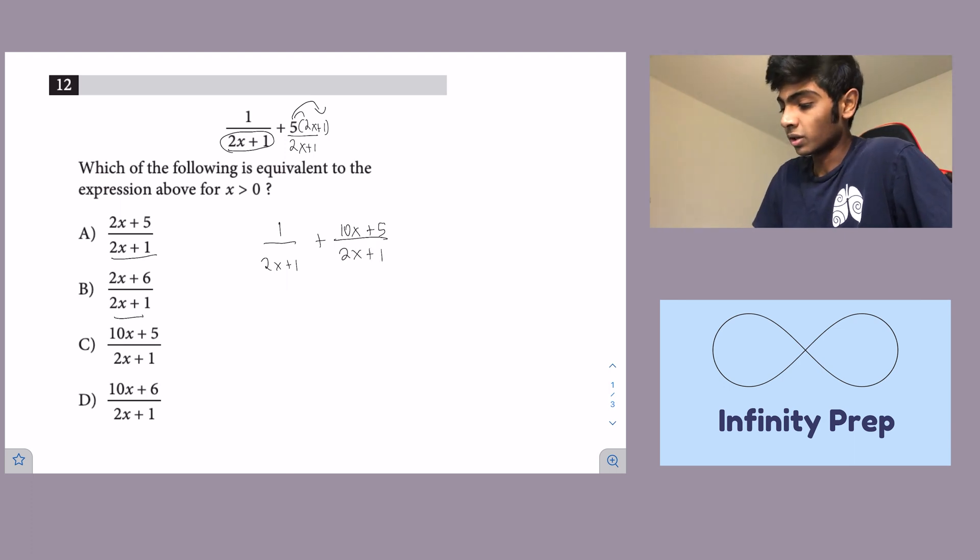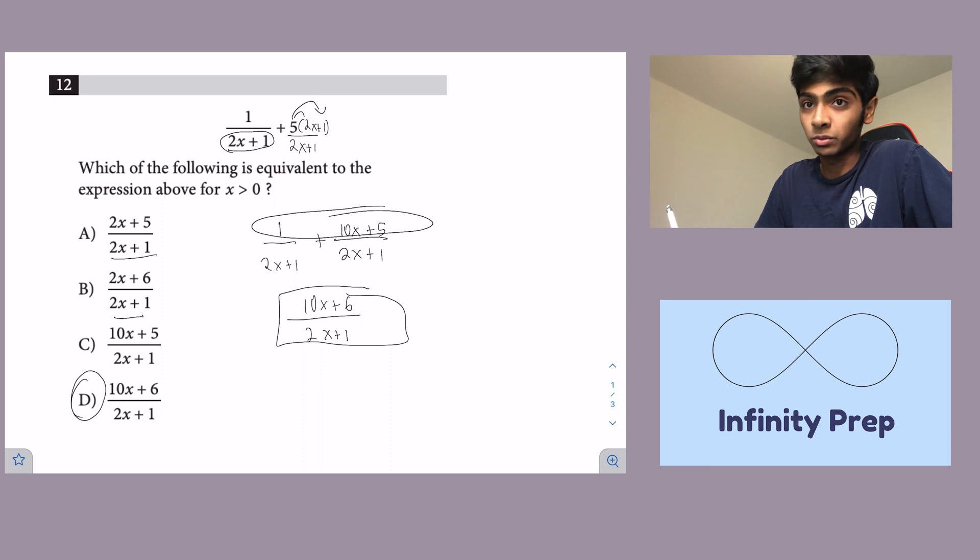Now all we have to do is combine the like terms over here and we're left with 10x plus 6 over 2x plus 1, and that will be our final answer which lines up with answer choice D. That's going to be your answer.